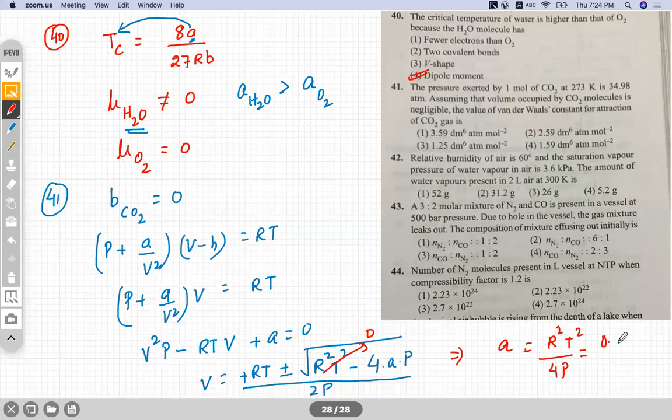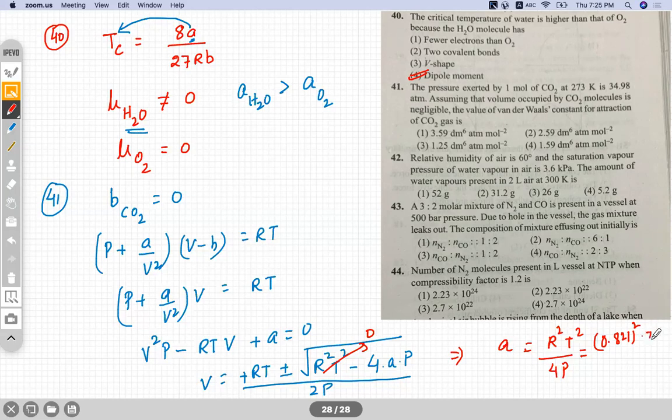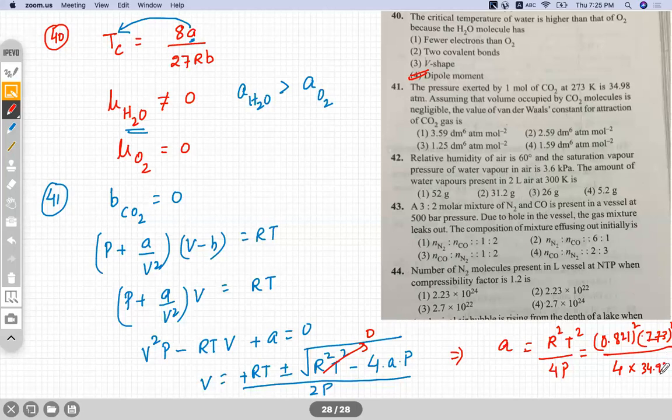So R is 0.821 here into T square is given 273 square divided by 4 times P is 34.98. See, the pressure is given in ATM, so obviously we have to take liter ATM per mole per unit. So when you solve this, you'll get the value of A.